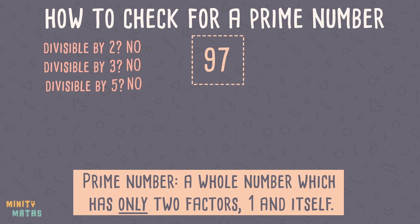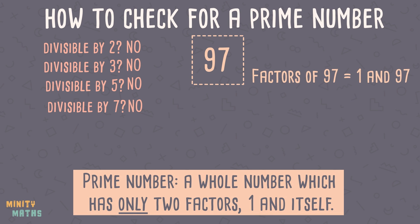There is no need to check if it divides by 6, or any multiple of 2 for that matter. If we divide 97 by 7 we don't end up with a whole number. 8 is a multiple of 2 so there's no need to check this. 9 is a multiple of 3, which we have already tested. 10 is a multiple of 2 and 5, which we have already checked. We can stop here because if we multiply any further numbers by anything larger than 10 we will get a number larger than 97. Therefore, 97 is a prime number.